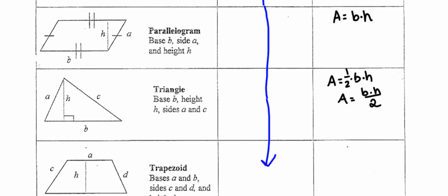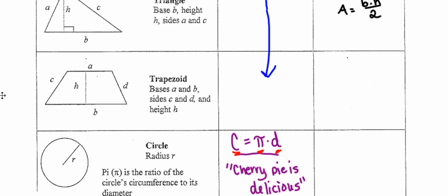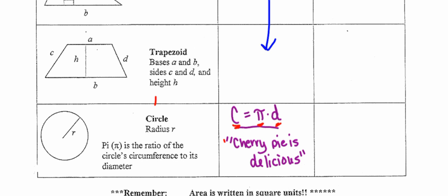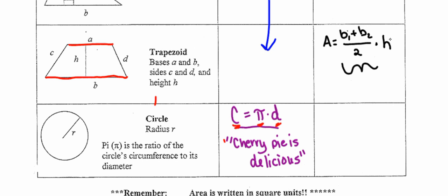The trapezoid is a little bit different, but it too is really just a variation on area equals base times height. In the case of the trapezoid, we have two different bases, so we're going to take an average of those two bases: the first base plus the second base divided by two. Then we multiply that times the height — just a variation on the base times height formula.